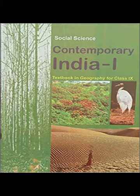The thorn forests and scrubs — in regions with less than 70 centimetres of rainfall, the natural vegetation consists of thorny trees and bushes. This type of vegetation is found in the north-western part of the country, including semi-arid areas of Gujarat, Rajasthan, Madhya Pradesh, Chhattisgarh, Uttar Pradesh and Haryana. Acacias, palms, euphorbias and cacti are the main plant species. Trees are scattered and have long roots penetrating deep into the soil to get moisture. The stems are succulent to conserve water. Leaves are mostly thick and small to minimize evaporation.